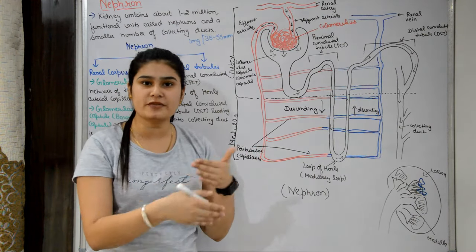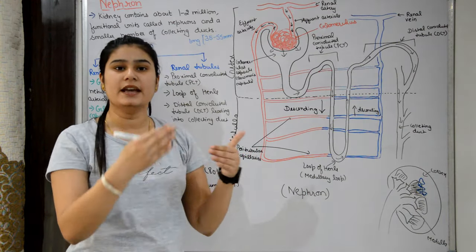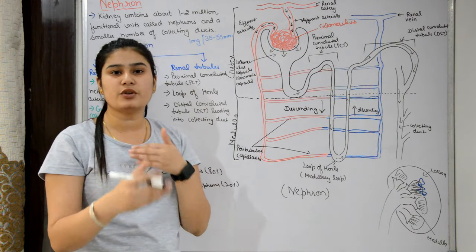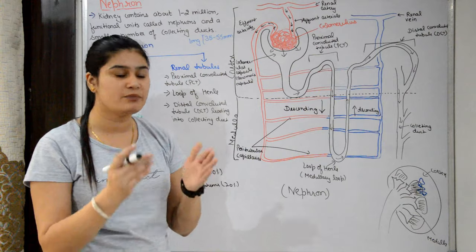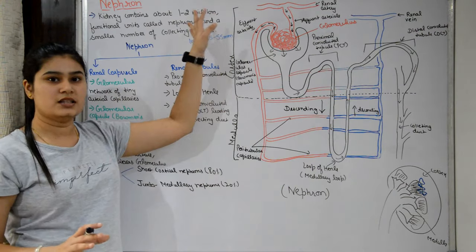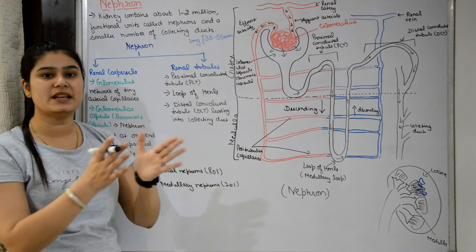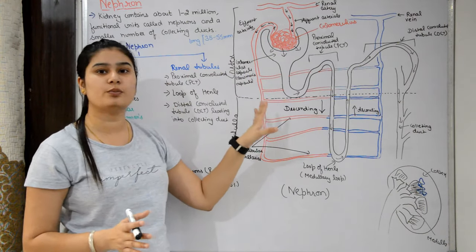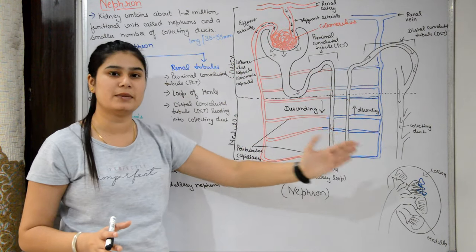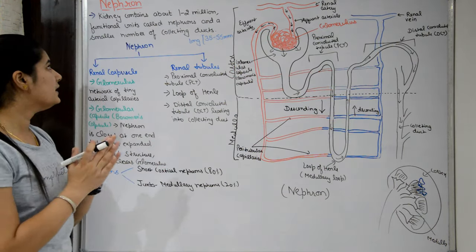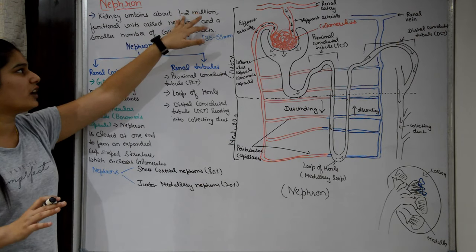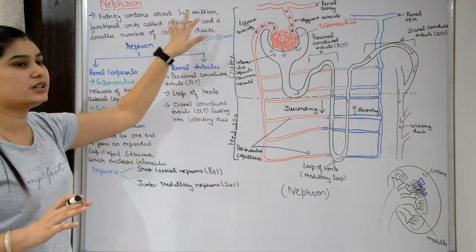The waste product removed from our body through this process is urine. The nephron is both the functional unit and the basic unit of the kidney. Nephron filters blood and excretes waste in the form of urine. Each kidney contains about 1 to 2 million functional units called nephrons.